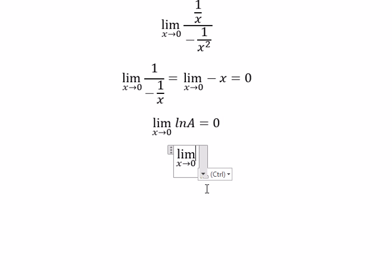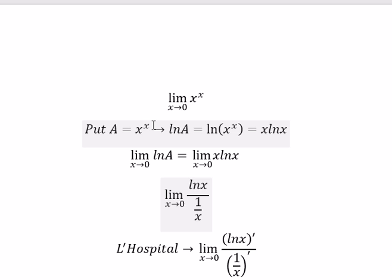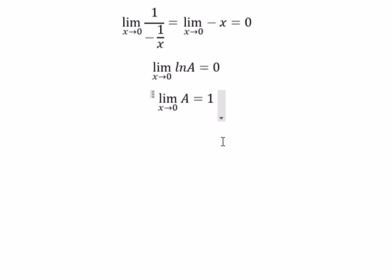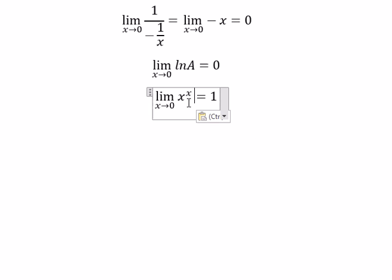The limit of A should be equal to 1, because when ln A equals 0, then A equals 1. And we know that A is x to the power of x. This is the reason why this limit equals 1.